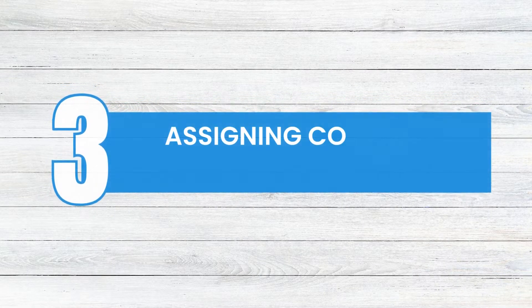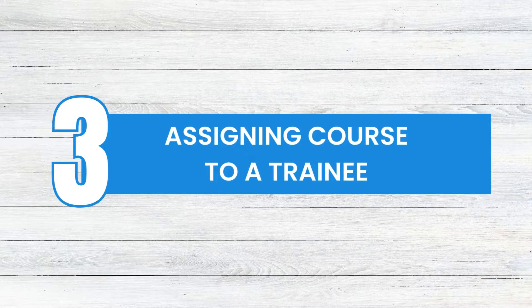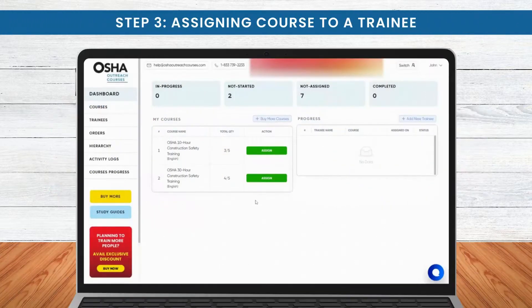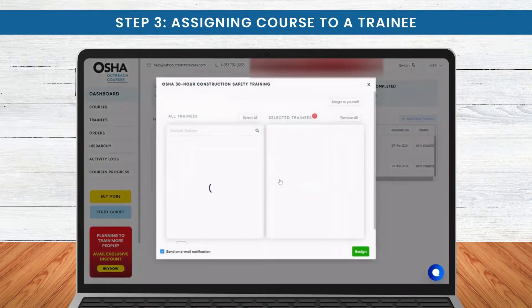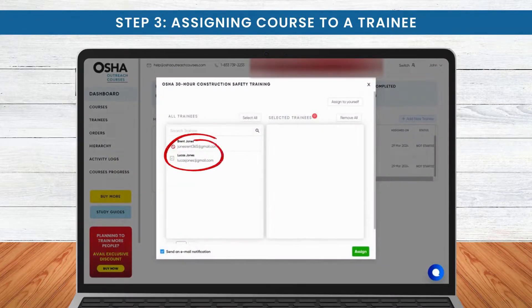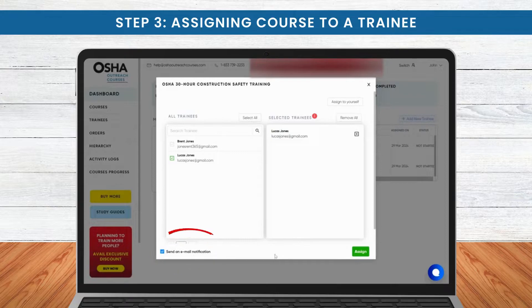Moving on to Step 3: assigning courses to trainees. Select the course you wish to assign and link it to the respective trainee, as shown on the screen. Your trainee will automatically receive a confirmation email informing them of the assigned course.